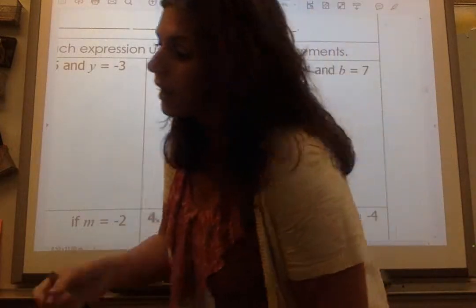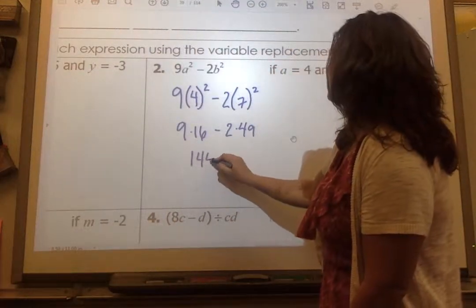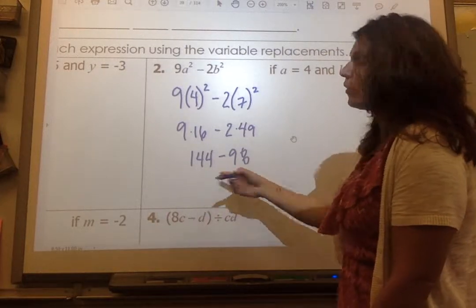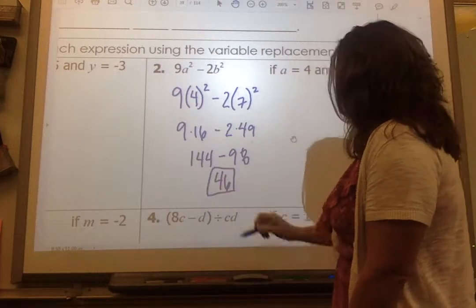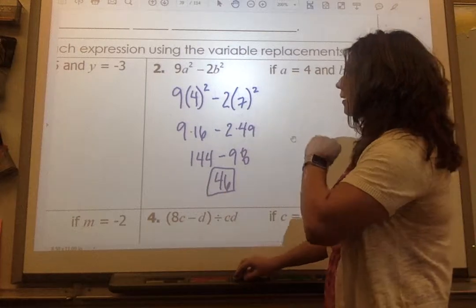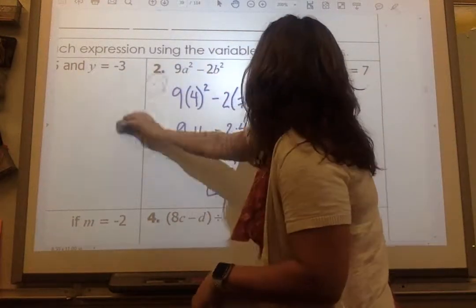Now I'm just going to do order of operations. And I get 9 times 16, 4 squared is 16, minus 2 times 49. So 9 times 16 gives us 144 minus 98. And 144 minus 98 is 46. That should be my answer for number 2.